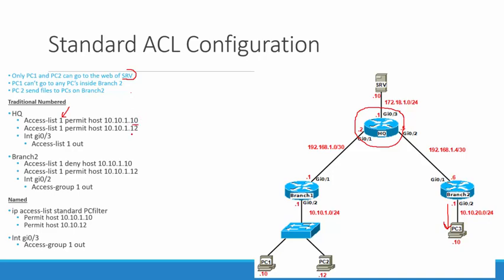The first thing is we want to allow both PCs to go to the server. We match PC1 by doing host 10.10.1.10, and we match PC2 by doing host 10.10.1.12. So: access-list 1 permit host 10.10.1.10 and access-list 1 permit host 10.10.1.12. It puts the implicit deny at the end, so after that everything else will be denied. Then we apply it to our Gig 3 interface going out — we created these on HQ and apply it going out of the Gig 03 interface.